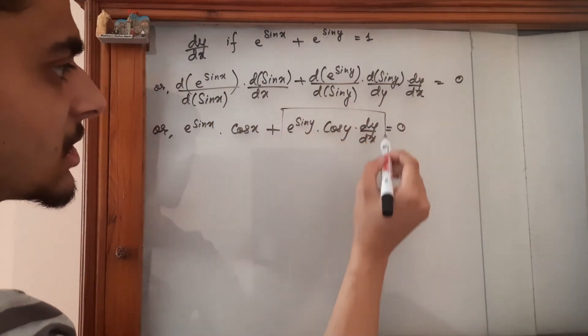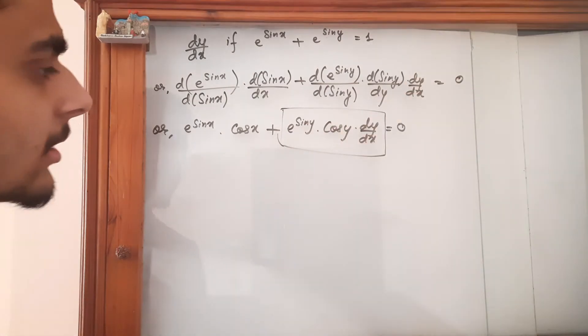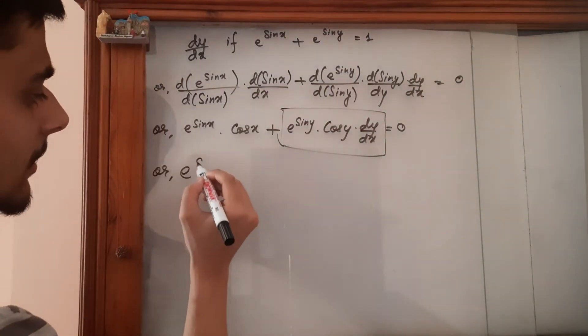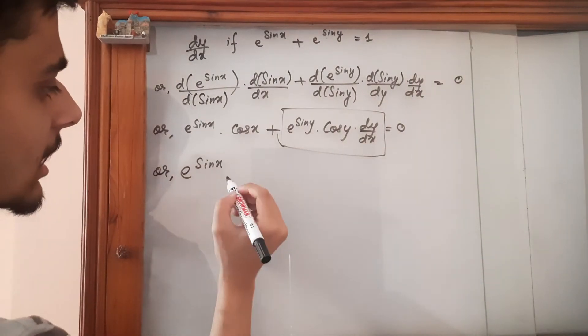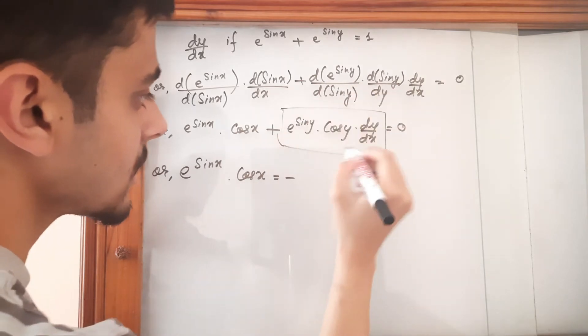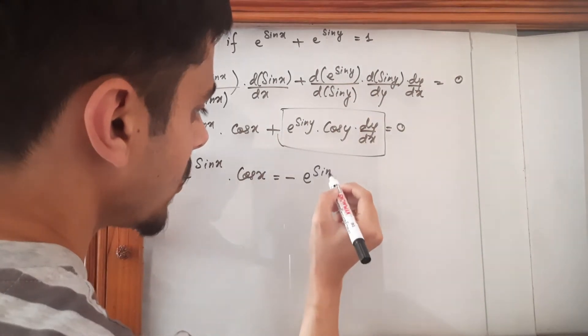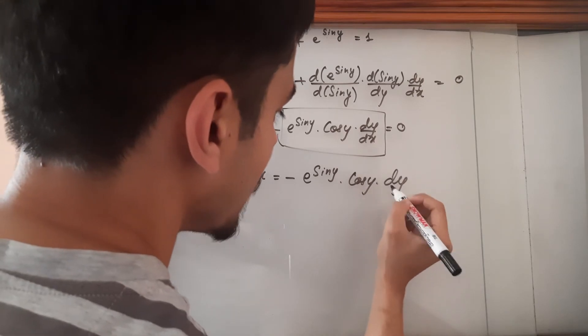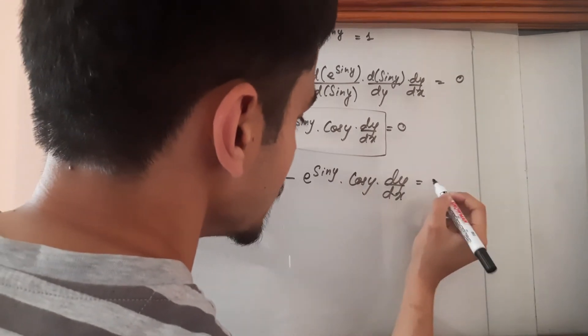So we are going to take this term to the right hand side. So it's going to be e to the power sine x times cos x is equal to minus e to the power sine y times cos y times dy upon dx.